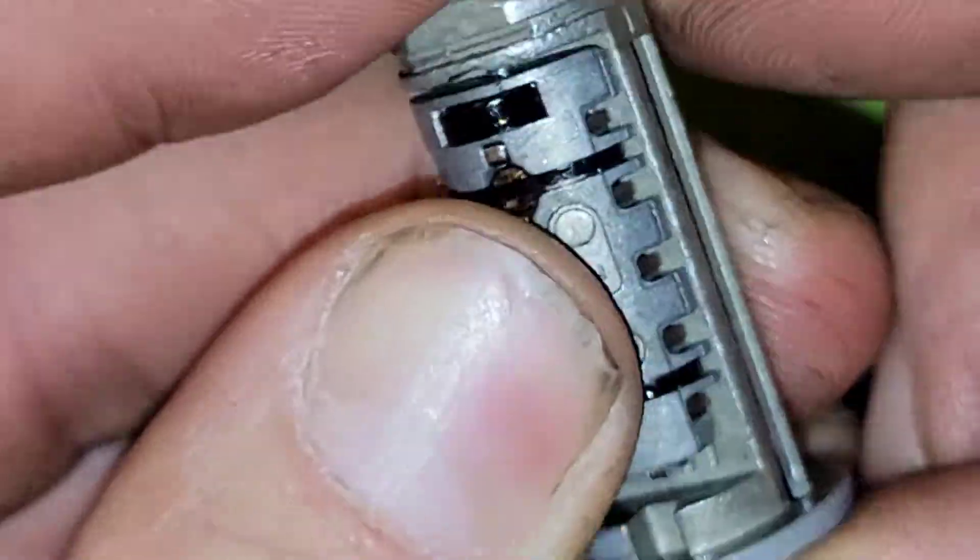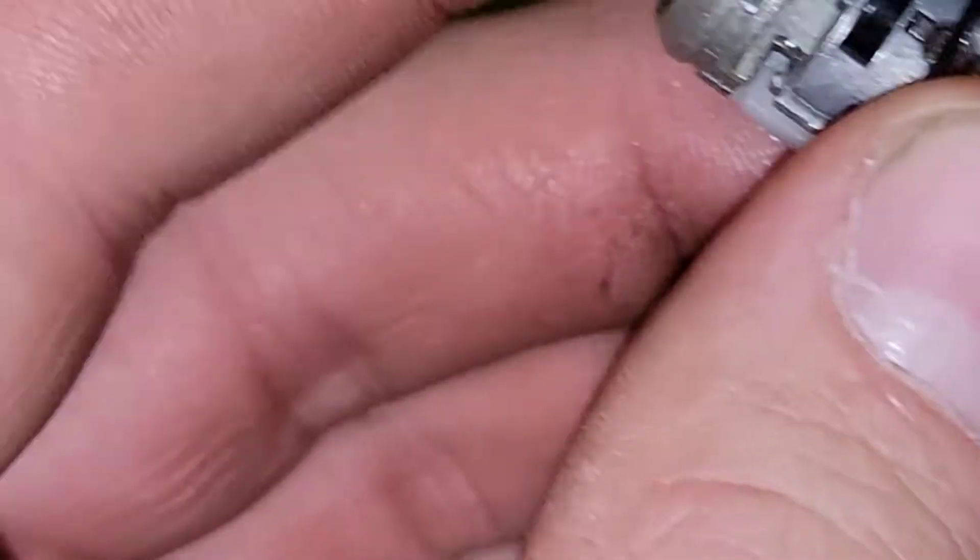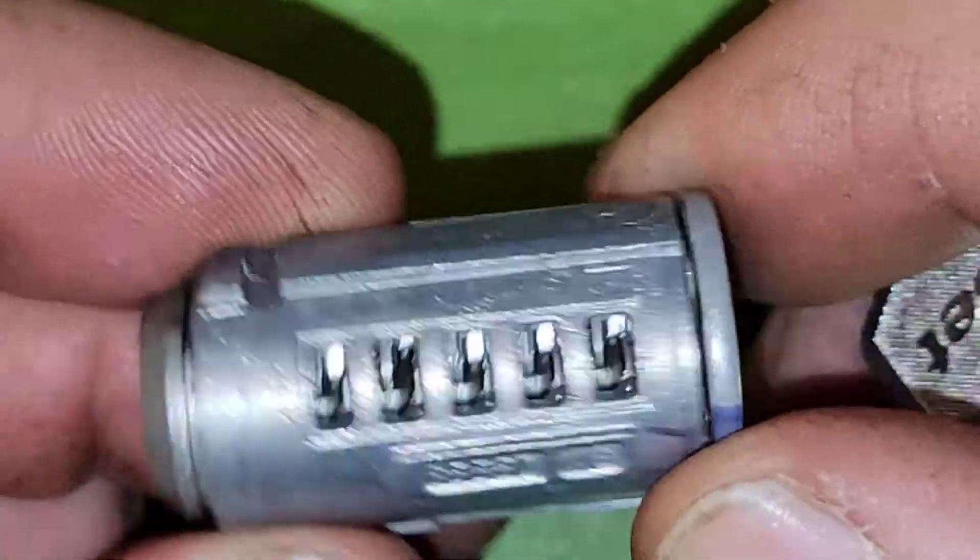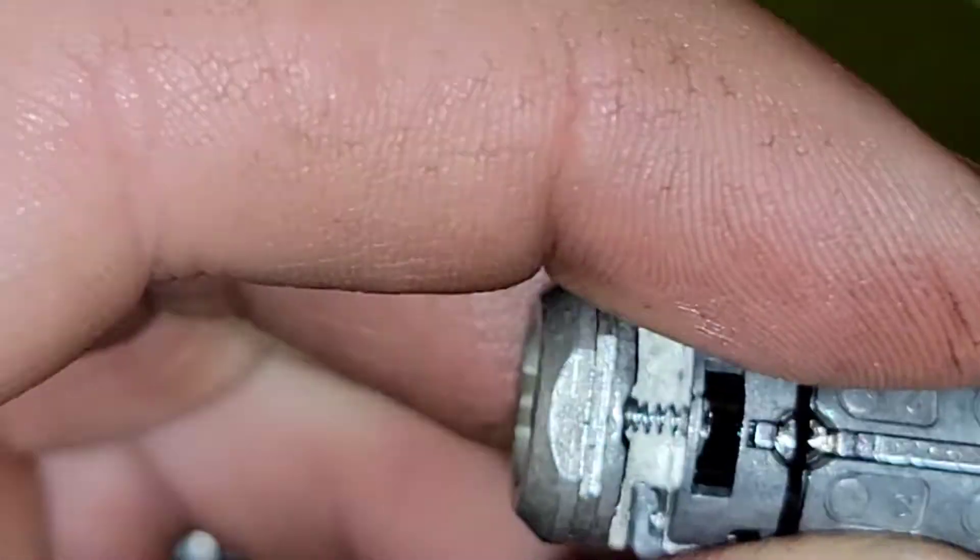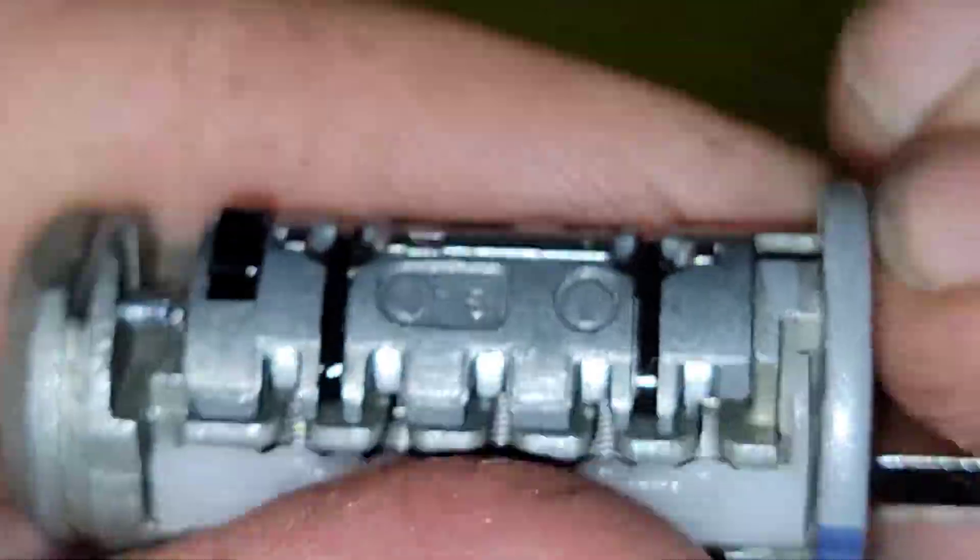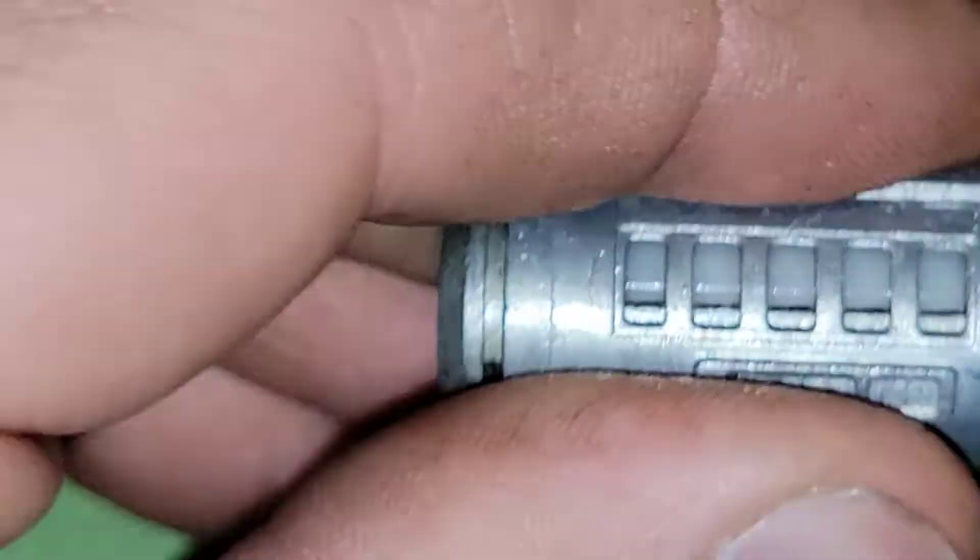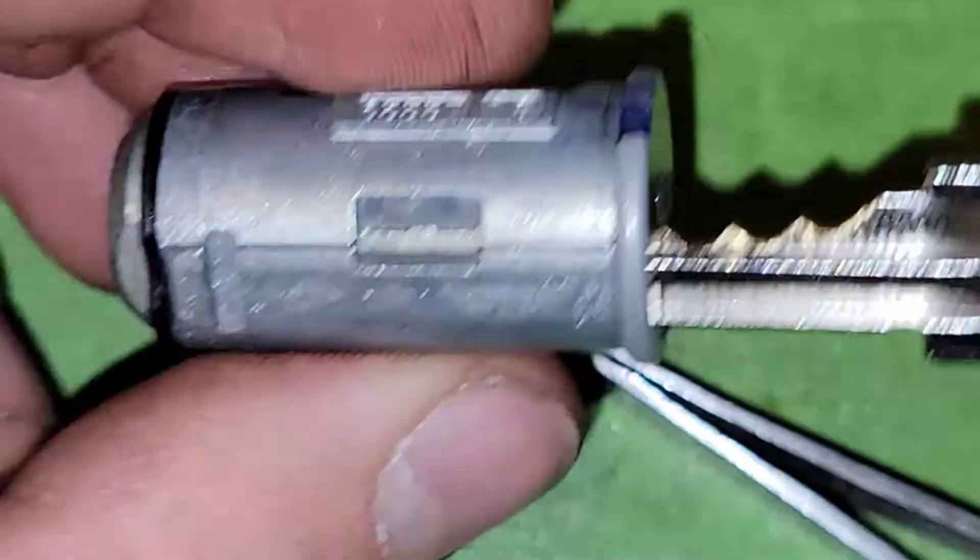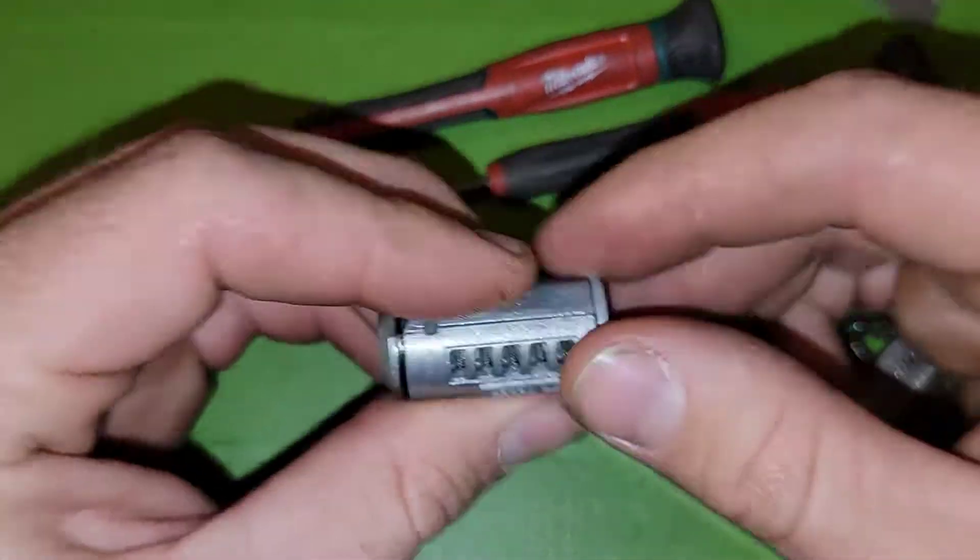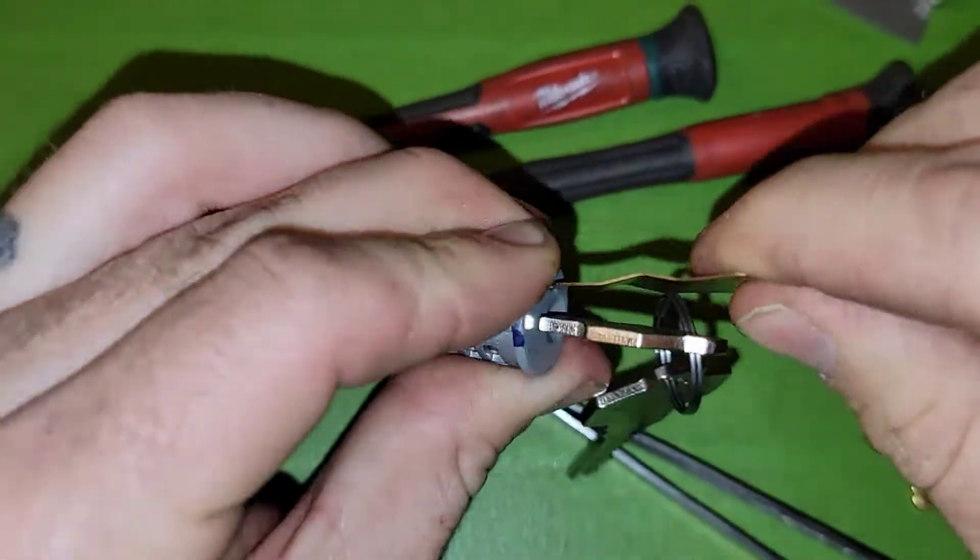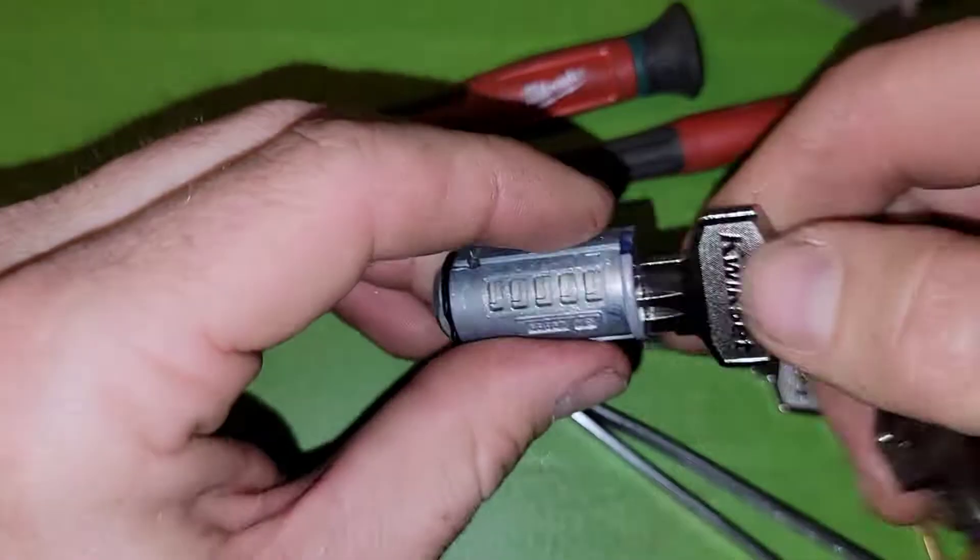In the Kwikset version, there is a ball bearing there, but that ball bearing also allows for the shim to be inserted, that real thin shim on the Gen 4 locks. You can insert that shim right alongside the plug in between the plug and the housing, and you can actually apply pressure to that sidebar, and that is what allows you to start picking it. From what I gather and everything that I've tried and found on this lock, you cannot fit a shim in there because it doesn't have that open void where that ball bearing is.